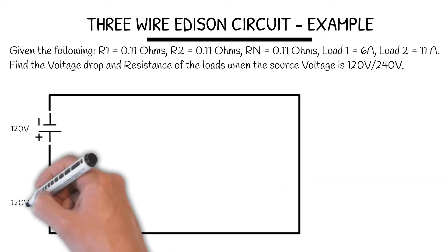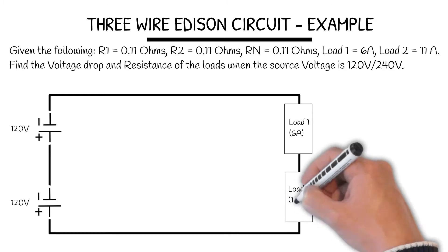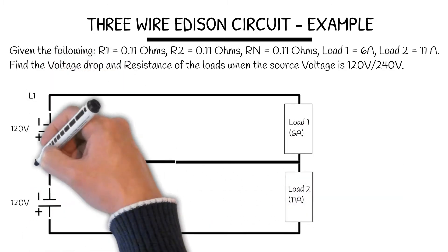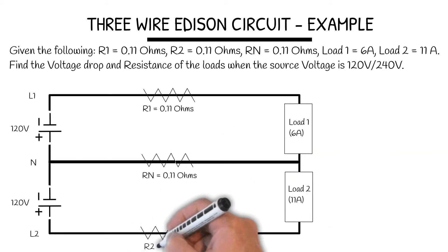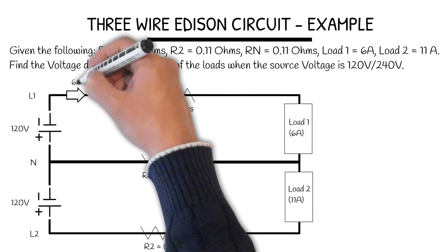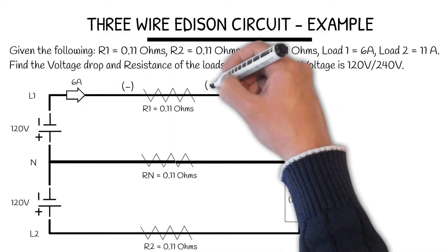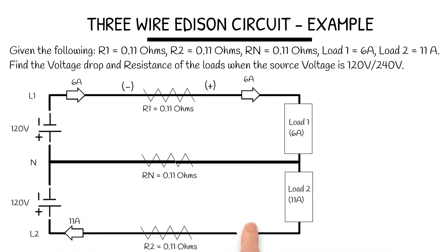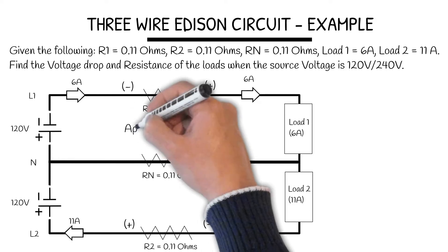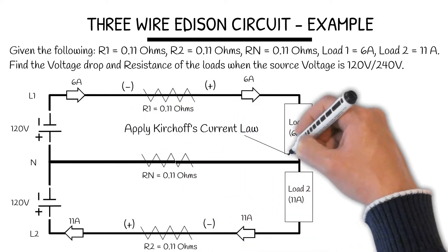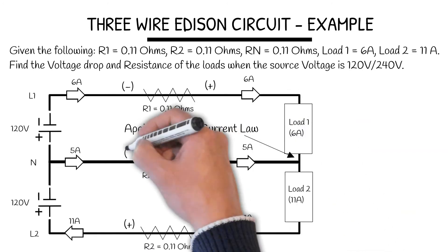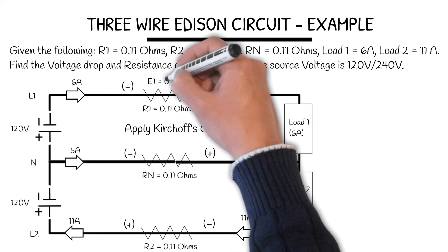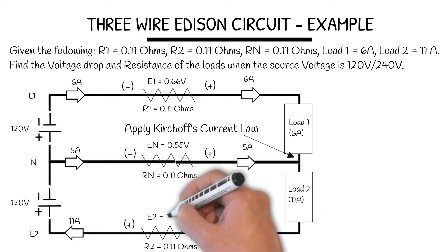Start by drawing a picture and labeling all components. Applying electron flow, we draw 6 amps from the source, which creates a negative and a positive on resistor one. Heading back to the source, we have 11 amps, which puts a negative on the right and positive on the left. Applying Kirchhoff's Current Law, we need 5 amps heading towards the junction; therefore that side is positive and the other side is negative. Next, we find the volt drop across each resistor by taking the current multiplied by the resistance.